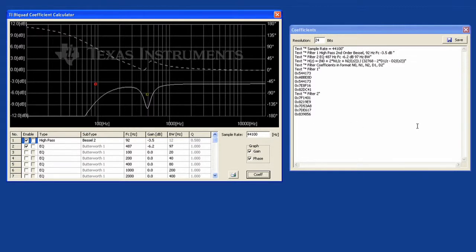The coefficient format is hexadecimal 2's complement with variable resolution, which is set to 24 bits by default. The resolution depends on the capability of the codec and must be adjusted accordingly. Check the datasheet of the codec for the supported coefficient resolution.